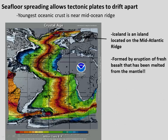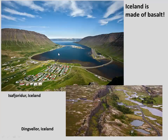One cool real-world example: if you've ever been to Iceland, it's an island located right on the mid-ocean ridge, and the entire island of Iceland is formed by the eruption of fresh basalt that was just recently melted from the mantle. Here's an example of what that looks like — big, thick basalt flows created by melting of mantle and eruption, where the eruptions happen to be above sea level instead of below.